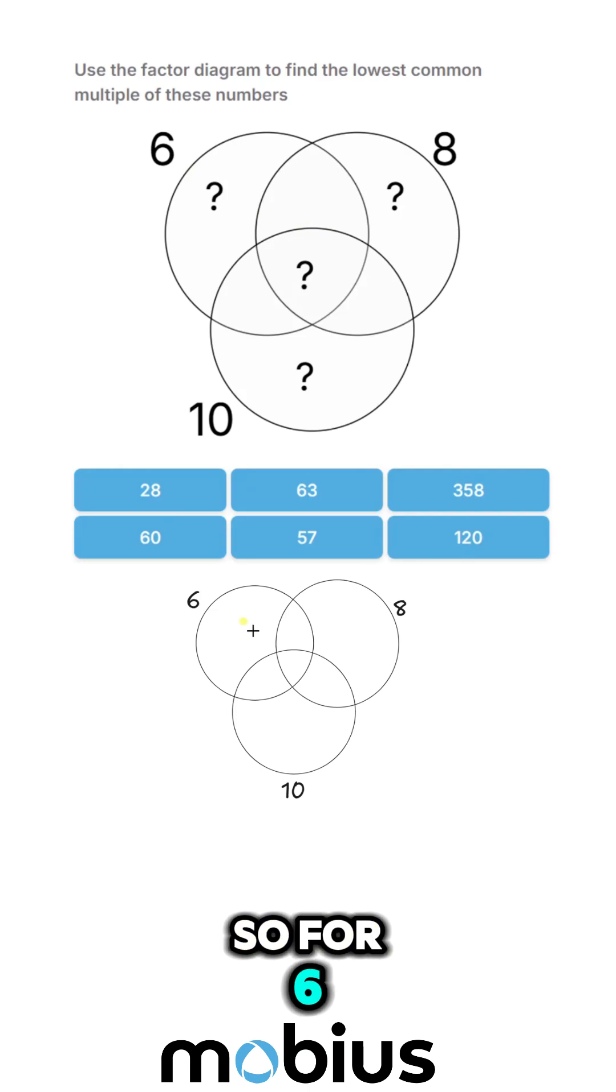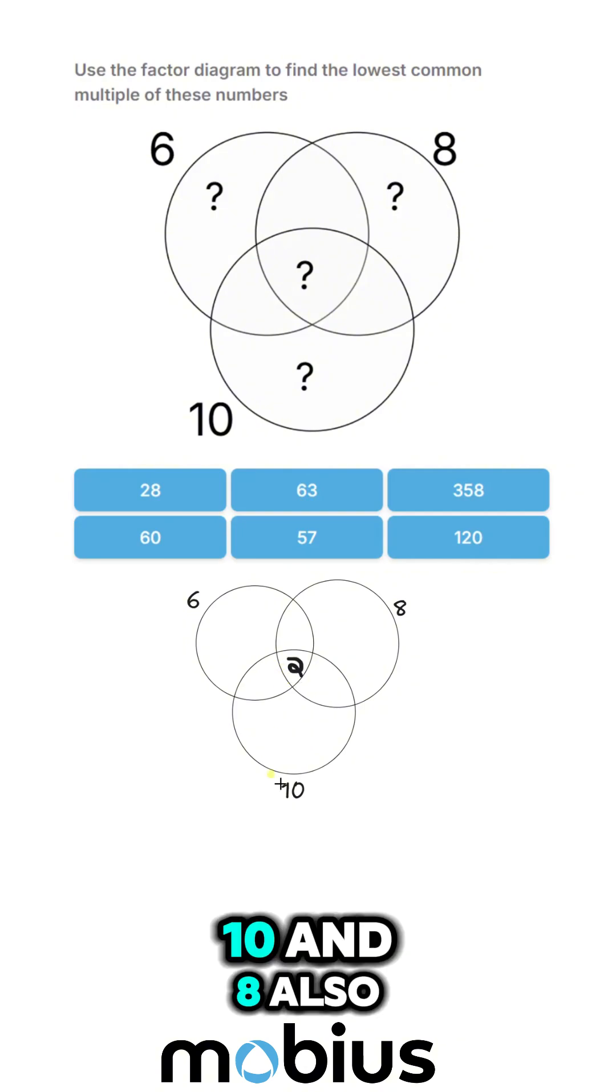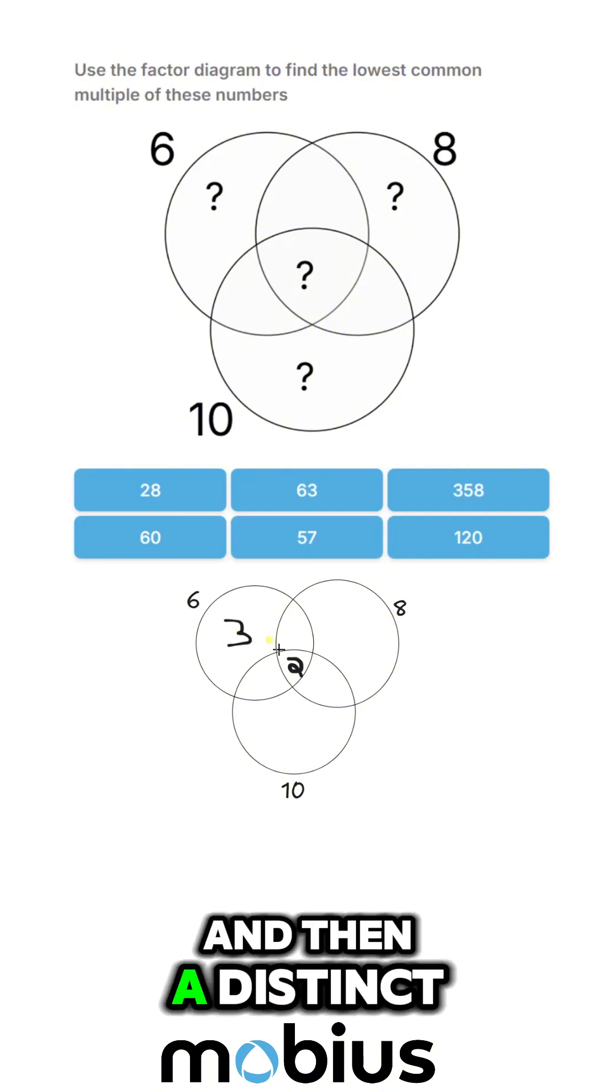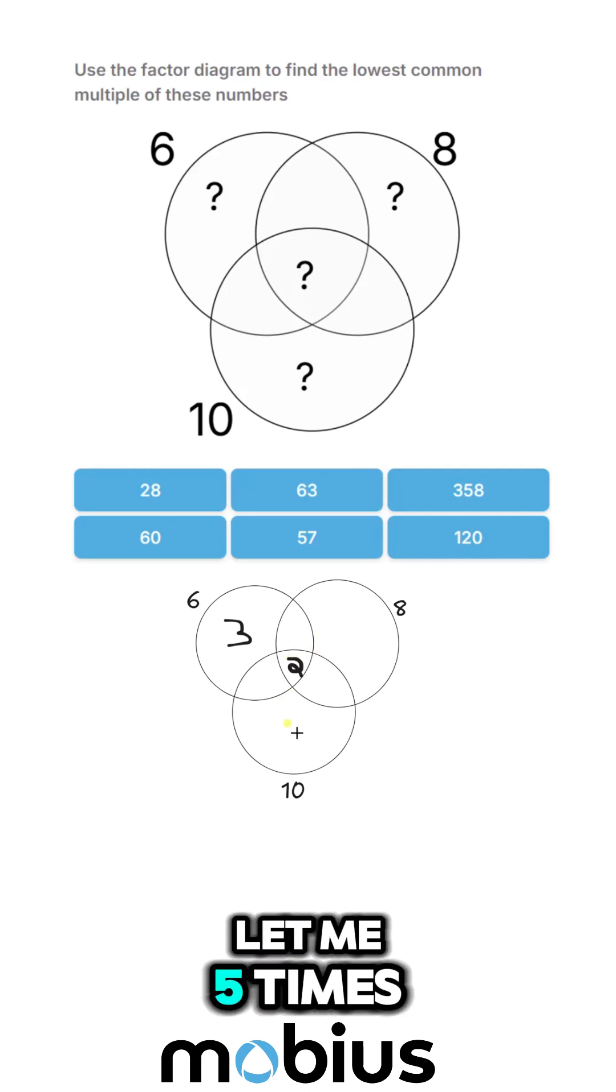So for six, we're going to have a factor that's shared with others. Ten and eight also have a factor of two, and then a distinct factor for six of three. Ten will be five times two.